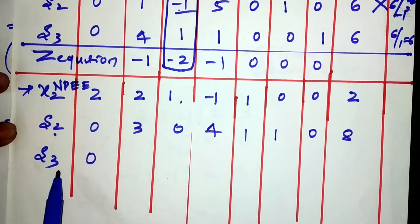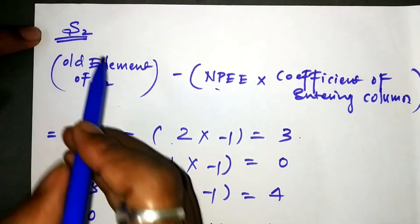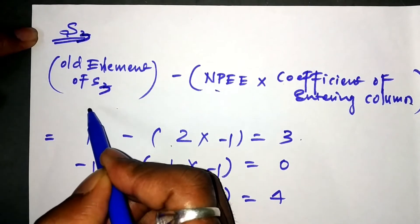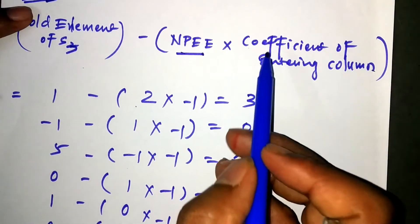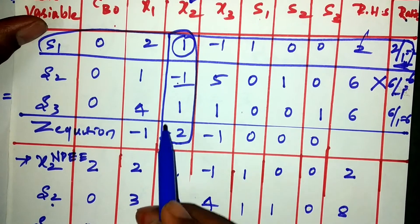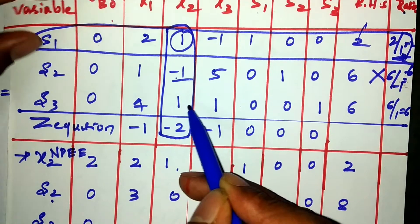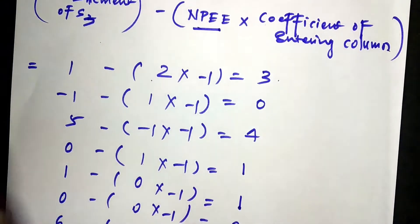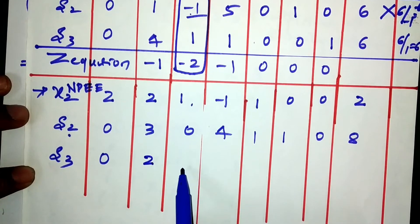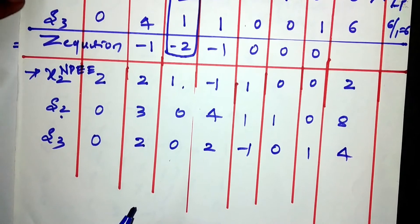Similarly for s3: old elements of s3 minus (new pivoted equation elements times the entering column coefficient for s3). The s3 coefficient in the entering column is 1. After calculation, the new s3 row values are: 2, 0, 2, minus 1, 0, 1, RHS=4. This completes the coefficients for s2 and s3 in the second iteration.